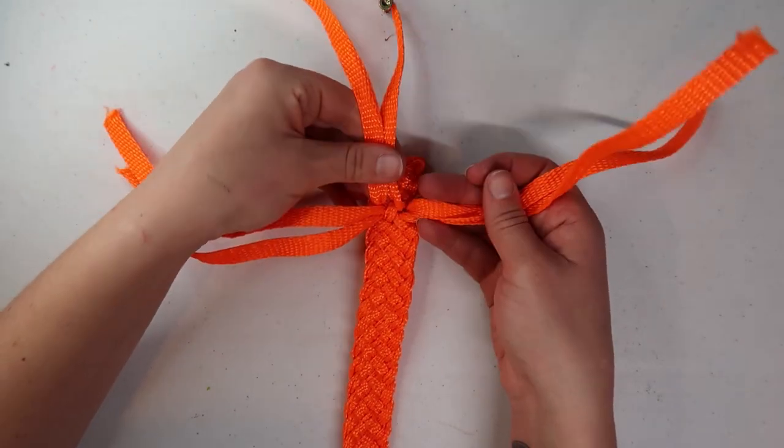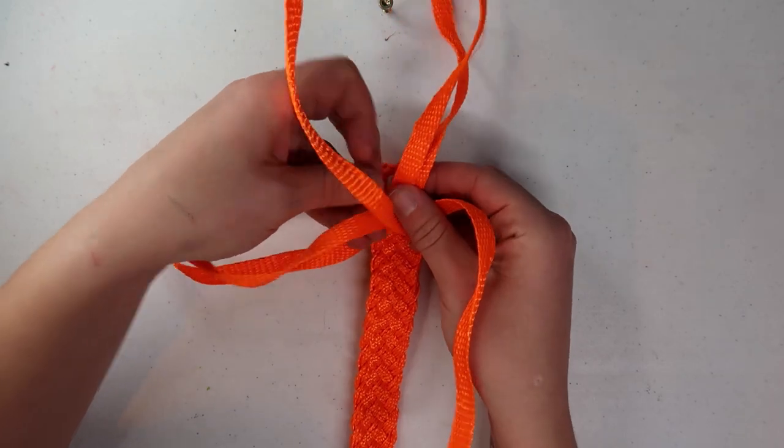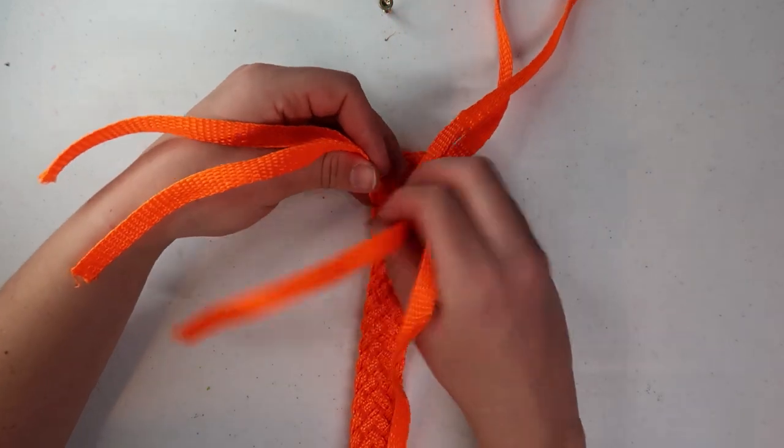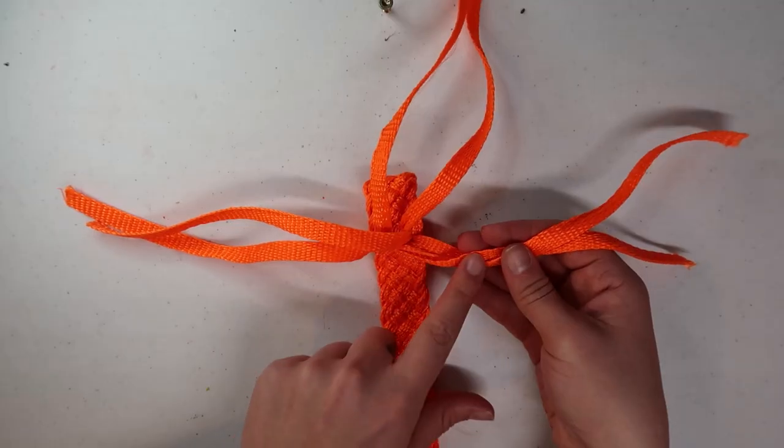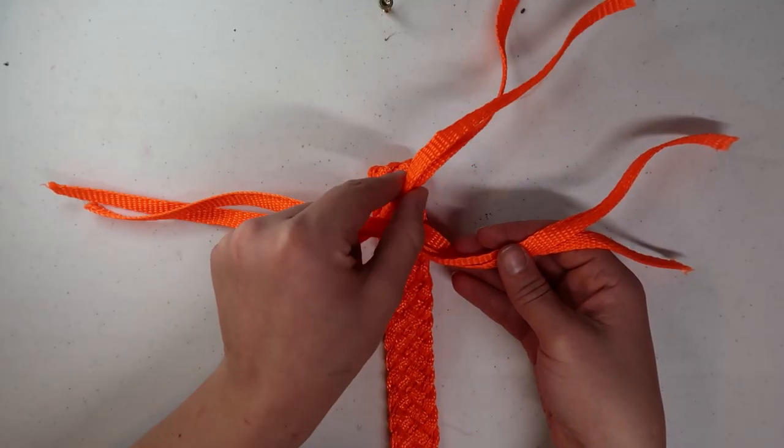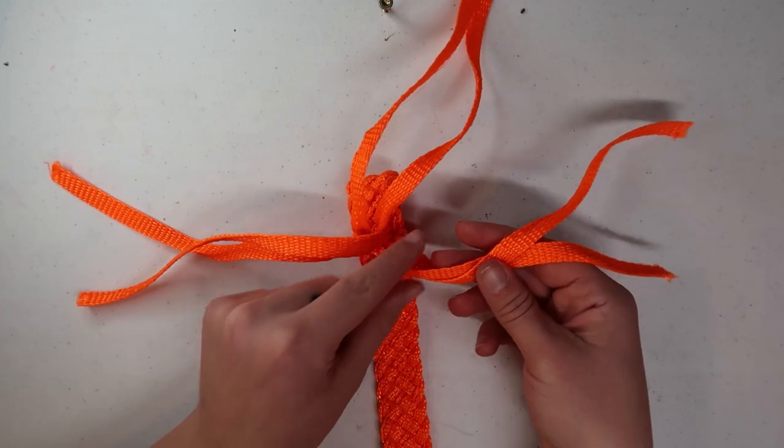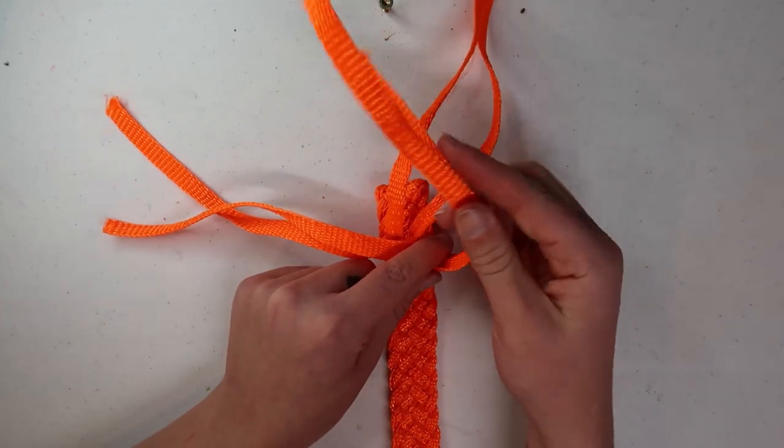So starting out, you're just going to want to form three groups. These can be three groups of one, three groups of two, two groups of three, and one group of two. The amount of strands really doesn't matter, just the amount of groups. For this video, we'll just refer to them as one, two, and three, and we're going to be working in a counterclockwise pattern.